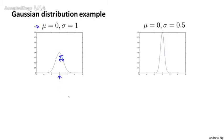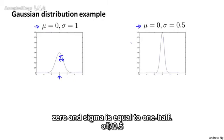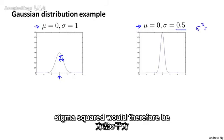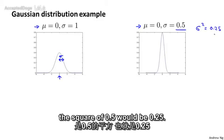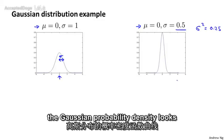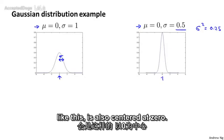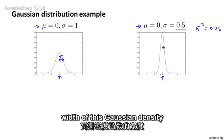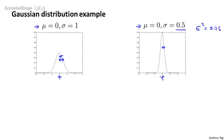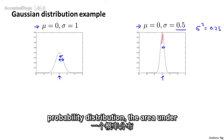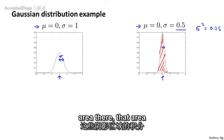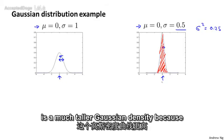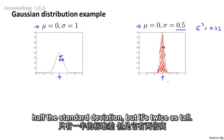Here's another example: if mu equals zero and sigma equals one-half, the standard deviation is one-half and the variance sigma squared would be 0.25. In that case, the Gaussian probability density is also centered at zero, but the width is much smaller — roughly half as wide — due to the smaller variance. Because this is a probability distribution, the area under the curve must integrate to one. So this Gaussian density is twice as tall, since it's half as wide.